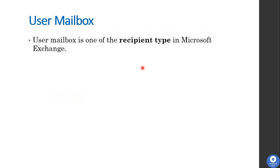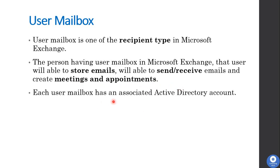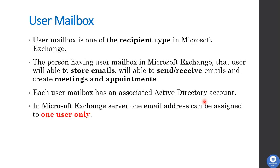The next type of mailbox is user mailbox. User mailbox is one of the recipient types in Microsoft Exchange. The person with a user mailbox will be able to store emails, send and receive emails, and create meetings and appointments, along with personal storage for emails and Outlook content. Each user mailbox has an associated Active Directory account, and one email address can be assigned to only one user — one mailbox per person.